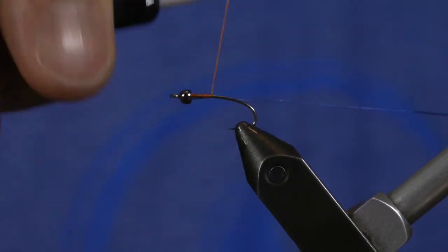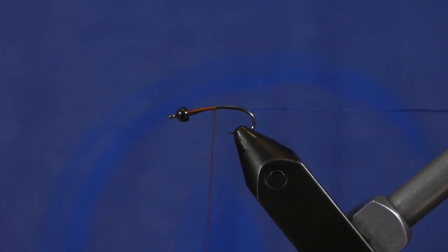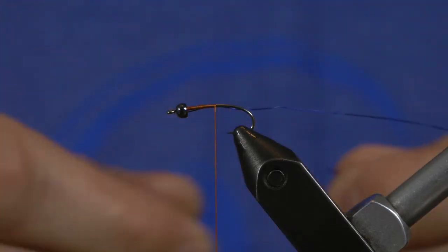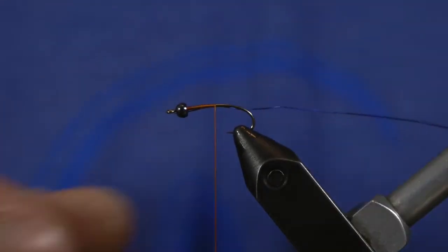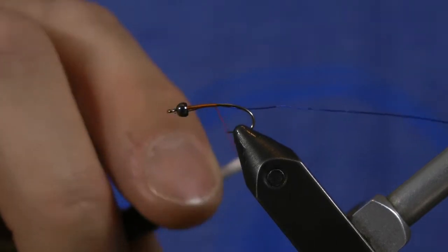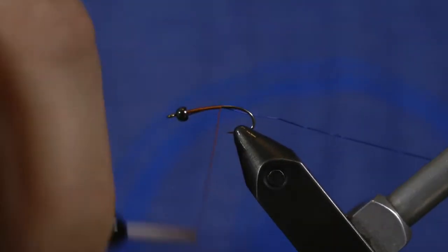One of our owners, Spencer Higa, tied one of the coolest flies on earth called Higa's SOS. I think one of the beautiful things about that fly is it's just got a really slim sleek profile, so it represents a lot of different things at once.